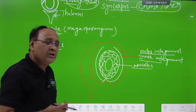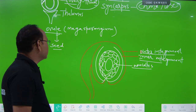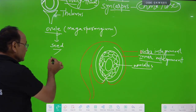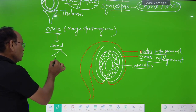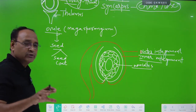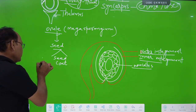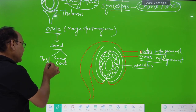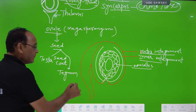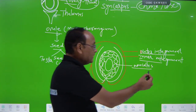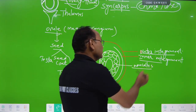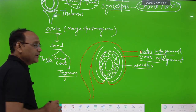What is the function of the integument? You know that ovule converts into seed after fertilization. Especially in the seed, two seed coats are present. The outer seed coat is known as testa, and the inner is known as tegmen. So the outer integument converts into testa and the inner integument converts into tegmen in the seed.